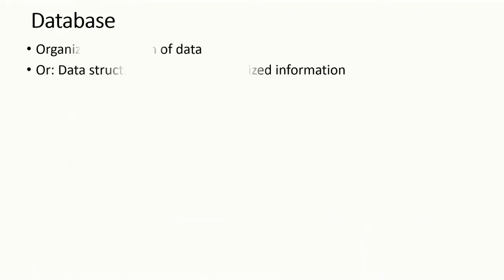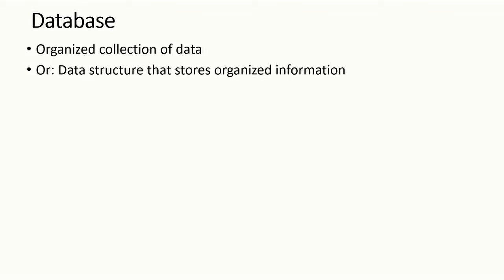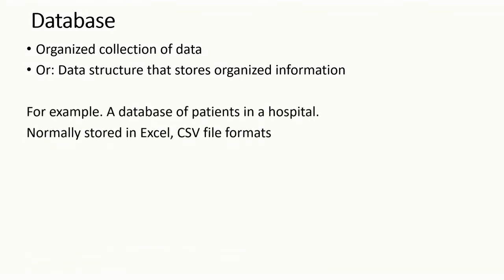Then we have what we call a database. What is a database? This is an organized collection of data, or a data structure that stores organized information. For example, if you pick an Excel sheet and start to register the name of a customer, when they bought your product, what product they took, their age, their phone number, and you store that data — it becomes a database. We can have a database of patients in a hospital. These are normally stored as Excel or CSV files, but there are other forms like SQL.